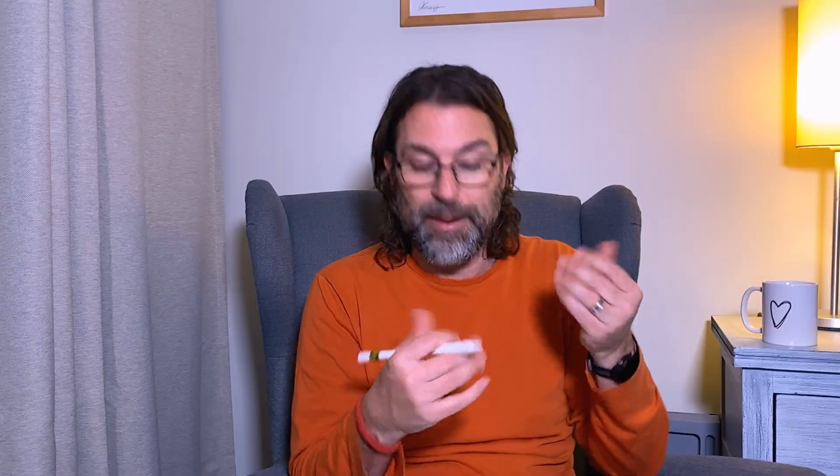Typically you're going to be told how many data values you have in a group. If you're not even doing a cumulative frequency graph, you should always add up your frequencies just so you know the total number of data items that you're looking at.